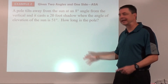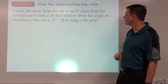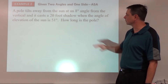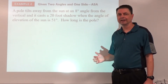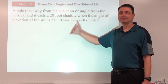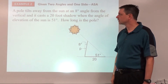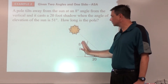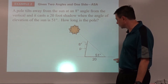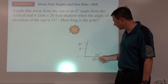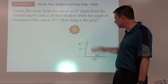Example number two is an application problem. A pole tilts away from the sun at 8° from the vertical and casts a 20-foot shadow. When the angle of elevation of the sun is 51°, how long is the pole? Let's take in the information and sketch the situation. We include the sun, the pole tilting away at 8° from vertical, flat ground, a shadow of 20 feet, and the angle of elevation of 51° from horizontal up to the sun.